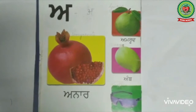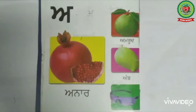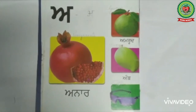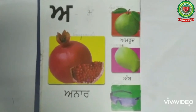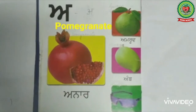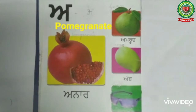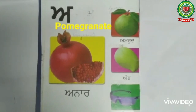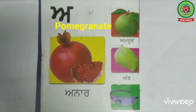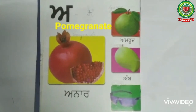Now come to the first picture and start reading: Ada, A — Anar. Anar means pomegranate. Write down P-O-M-E-G-R-A-N-A-T-E. Read it once again: Ada, A — Anar. Anar means pomegranate.